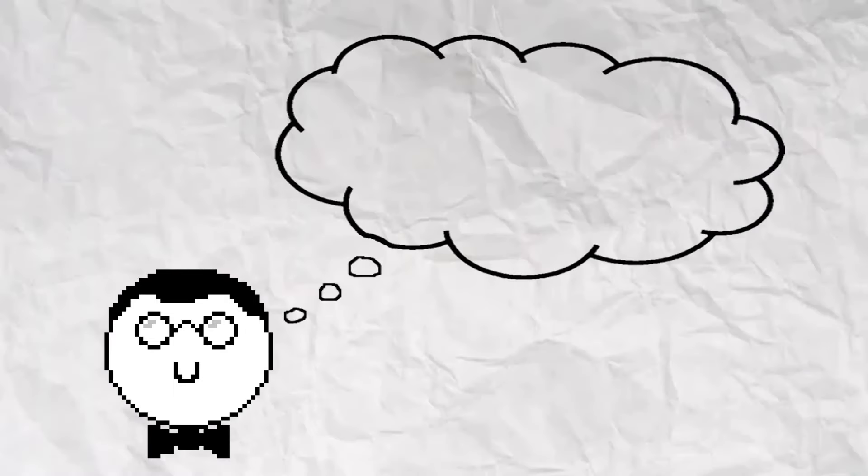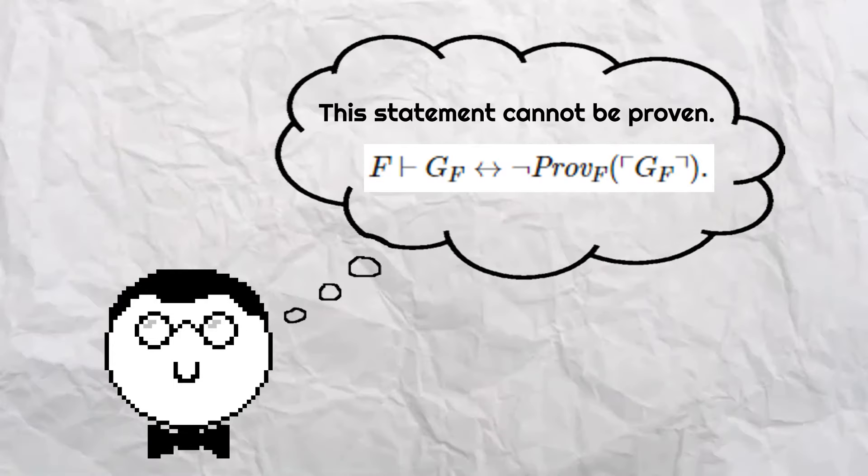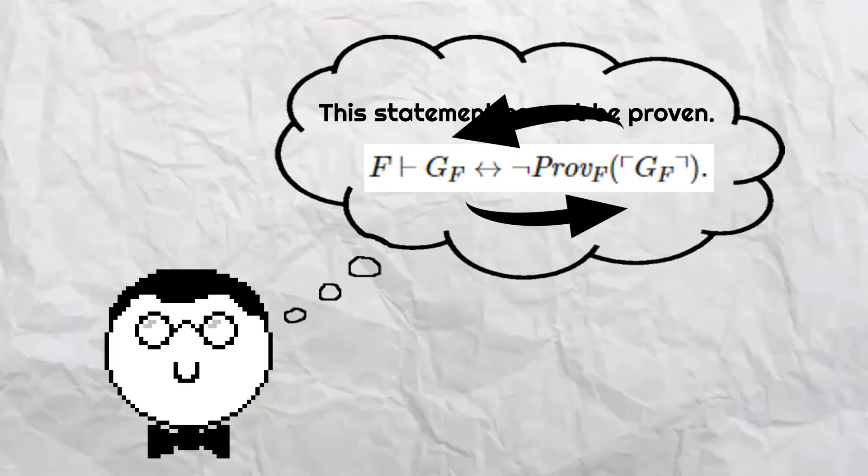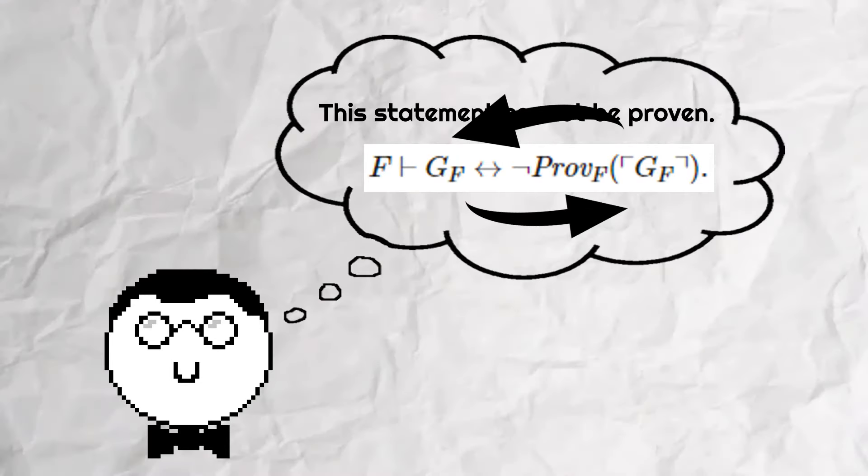Eventually, Gödel created a sentence in the system along the lines of, "This statement cannot be proven." The sentence is really strange because it refers to itself, and statements in mathematics like equations or formulas don't often do that.